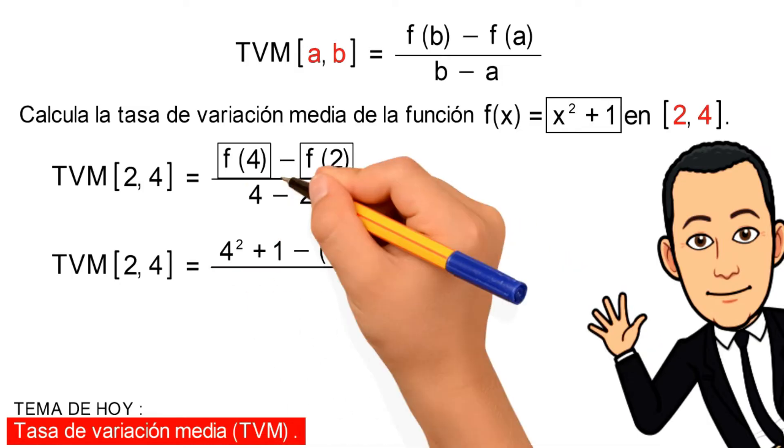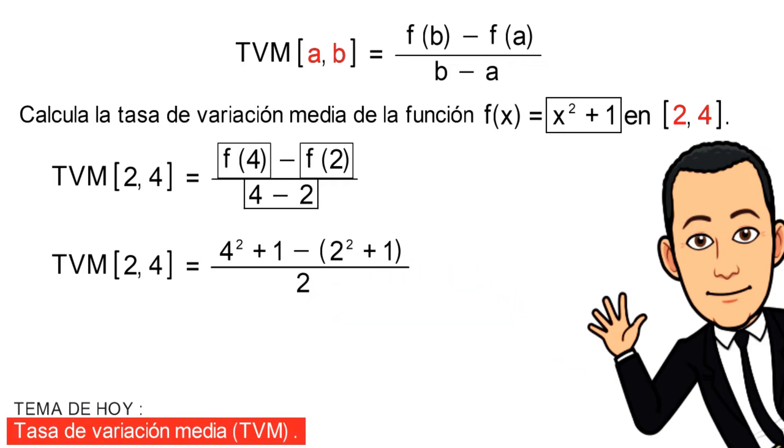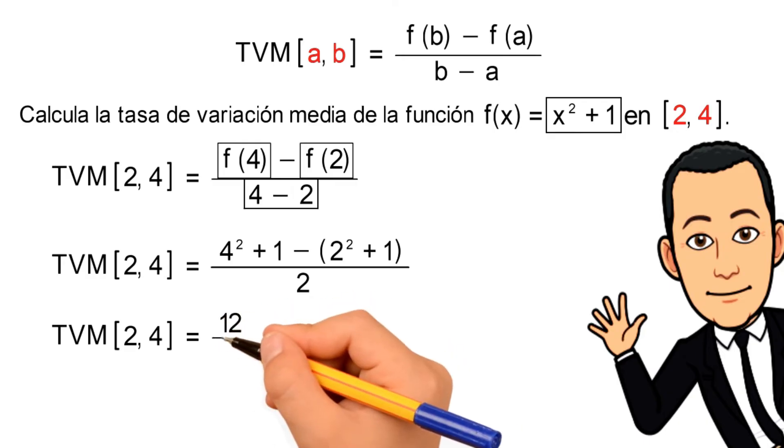Dividido, resolviendo la diferencia del denominador, nos quedaría 2. Luego resolviendo las operaciones planteadas en el numerador, nos quedaría que la tasa de variación media para el intervalo cerrado [2, 4] va a ser igual a 12 medios.